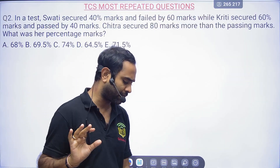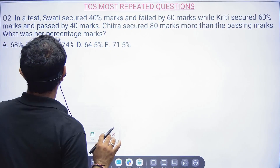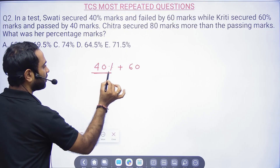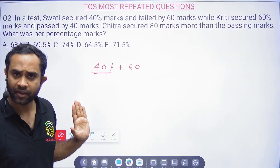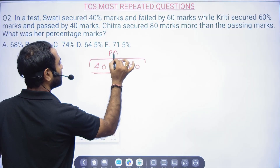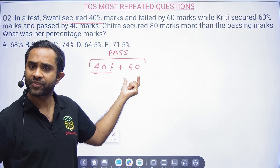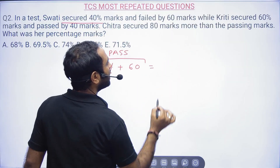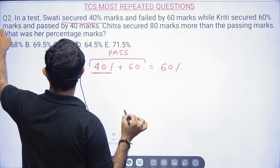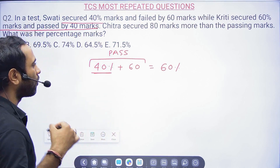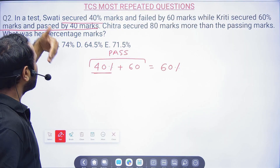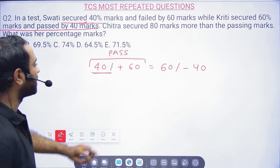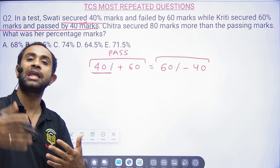Next question: In a test, Swathi secured 40% marks but failed by 60. That means if you give her 60 more marks she will pass. Krithi secured 60% marks and passed by 40 more marks — meaning Krithi scored 60% and had 40 marks more than the passing marks.